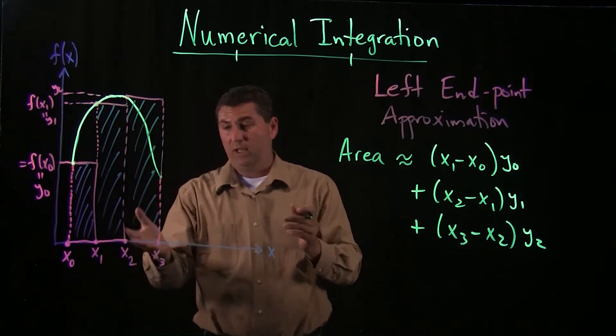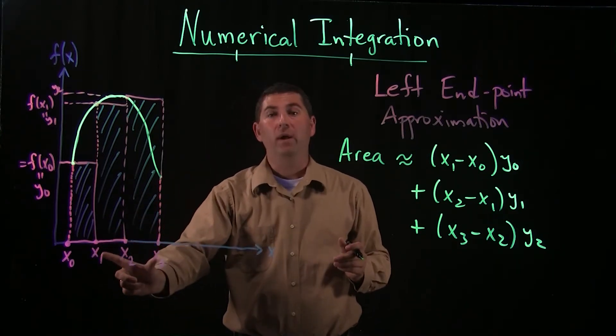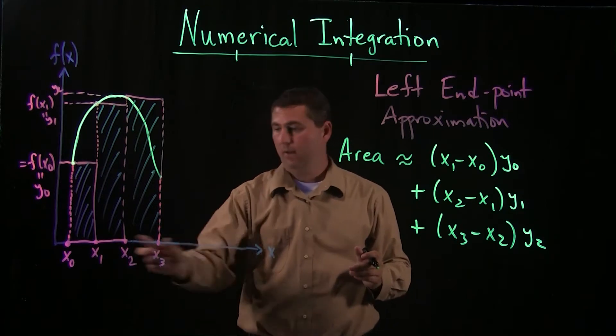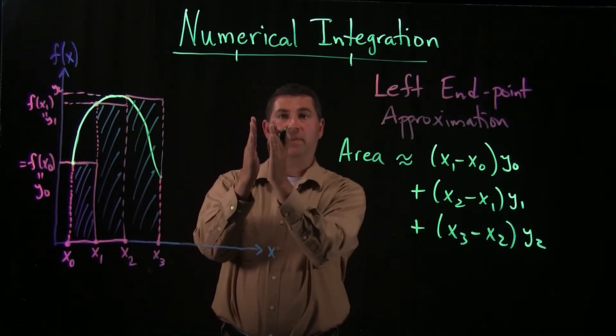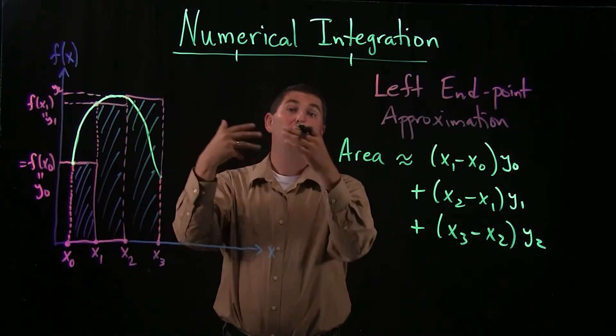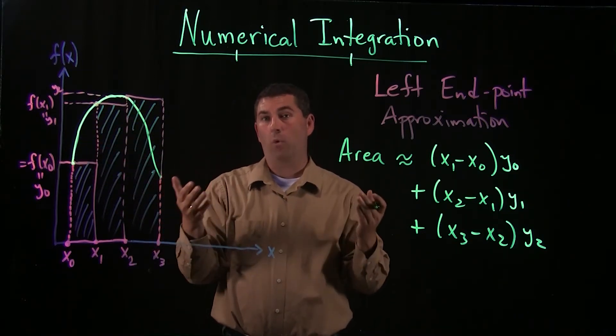One thing that you're going to realize quickly is if I had chosen more points between x0 and x3, subdivided into smaller intervals, my rectangles would have been a little bit thinner, but they would have more closely approximated this curve.